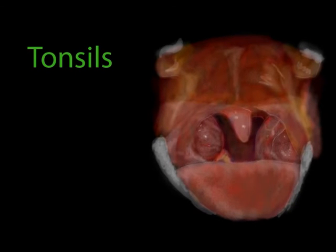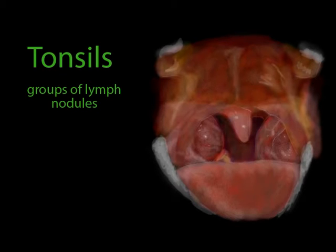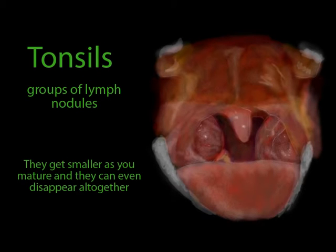Lymph nodules can be found as single structures in the body, or they can be grouped together in small clumps. That's what the tonsils are — groups of lymph nodules under the mucous membrane in the throat. These lymph nodules form a protective ring around the throat, strategically located to protect the body from foreign invaders. If the tonsils get infected, they can become inflamed and abnormally enlarged, as you see here. This condition is called tonsillitis. If the condition is chronic, the tonsils can be removed in a tonsillectomy. Tonsils tend to get smaller as a person matures and can actually disappear altogether in an adult.